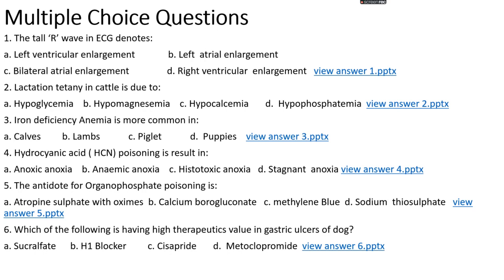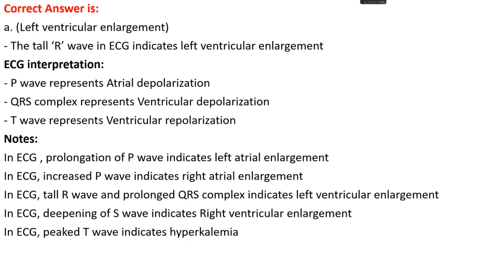The tall R wave in ECG denotes: options A, left ventricular enlargement; options B, left atrial enlargement; options C, bilateral atrial enlargement; or options D, right ventricular enlargement. The right answer is option A, that is left ventricular enlargement.